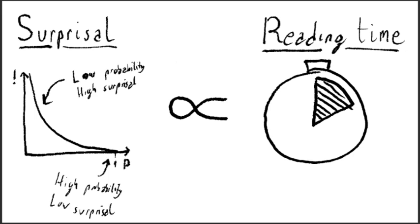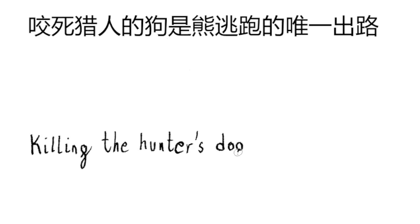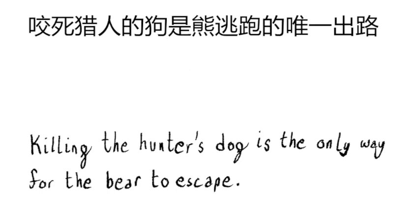Words that are very unlikely have very large surprisals, and take longer to read. To get a more concrete understanding of this idea, we can look at an example of a very surprising type of sentence, garden path sentences.